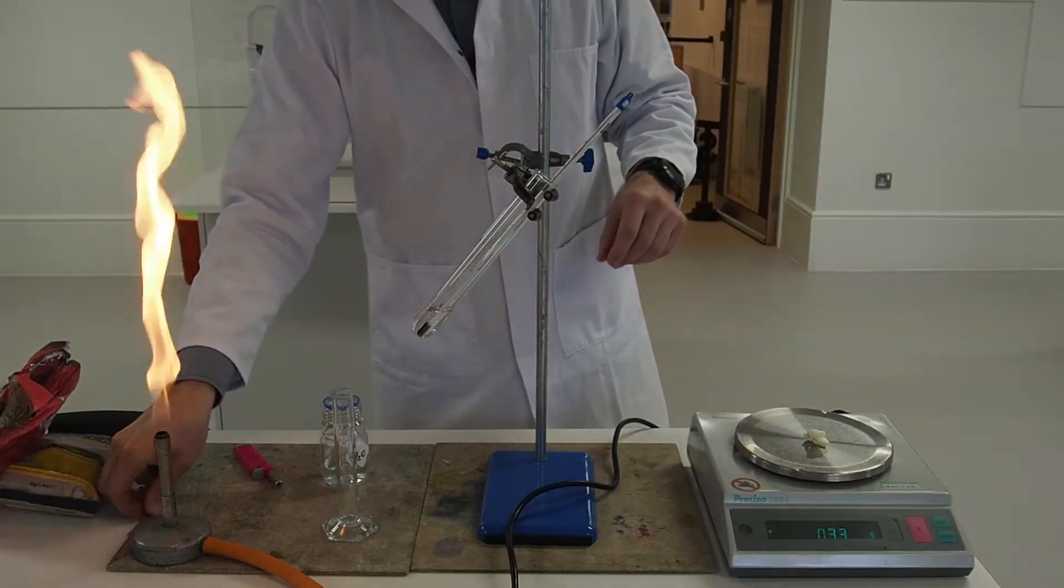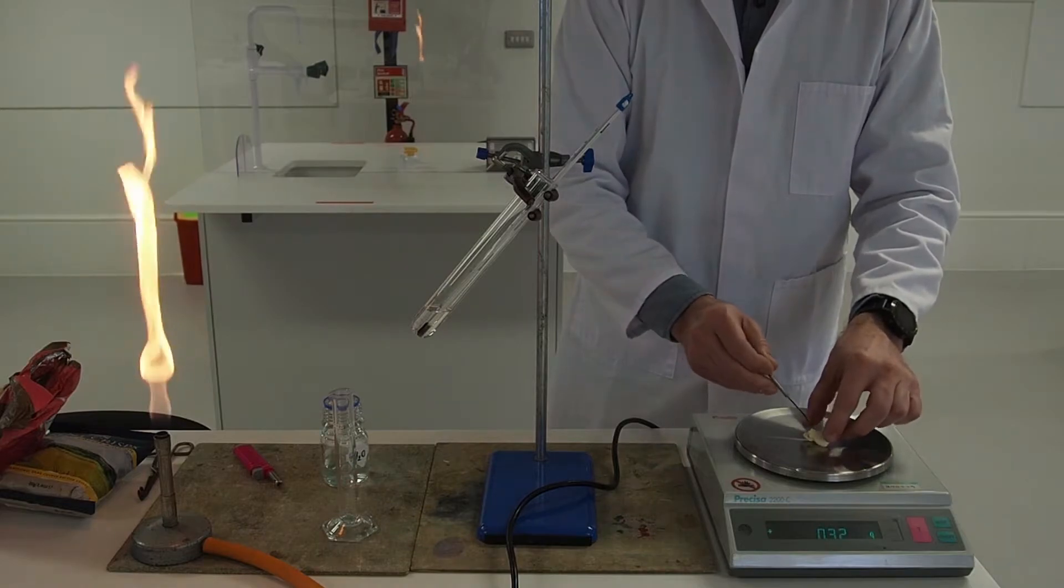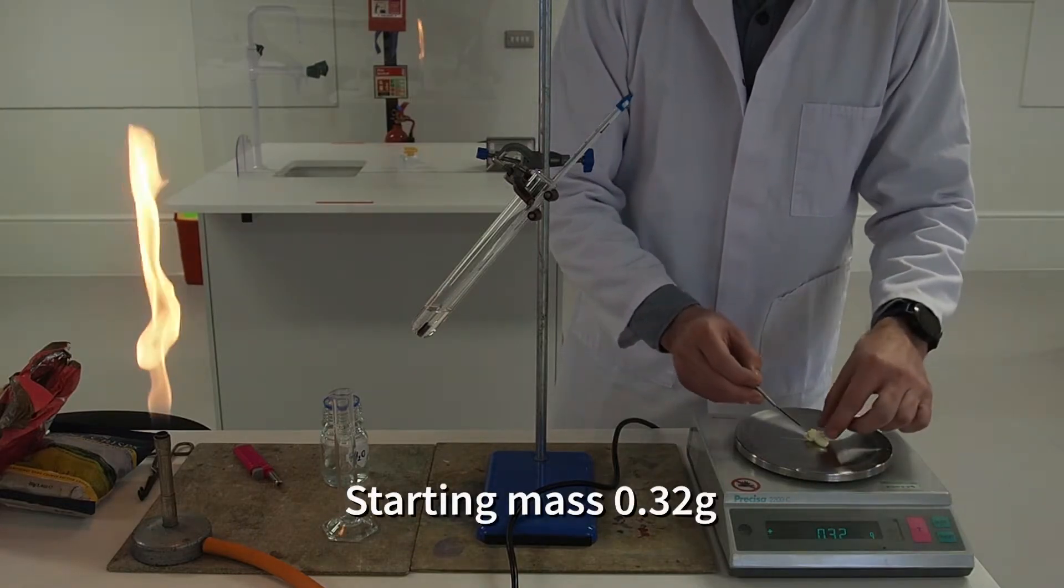Next a piece of food of known mass is attached to the end of the pin or perhaps held in a pair of tongs. Here the starting mass is 0.32 grams.